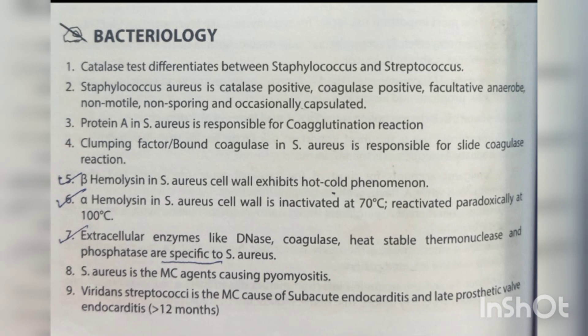Welcome to Easy Revision. Today we cover microbiology PYQs with bacteriology as the topic. The catalase test differentiates between staphylococci and streptococci. Staph aureus is catalase positive, coagulase positive, facultative anaerobic, non-motile, non-sporing, and occasionally capsulated. Protein A in Staph aureus is responsible for coagglutination reaction.